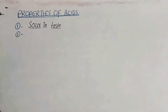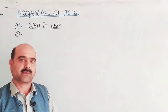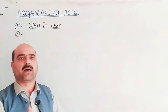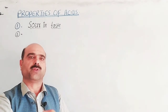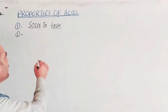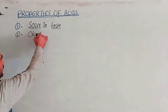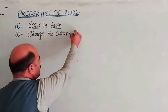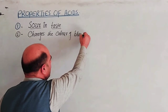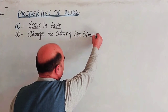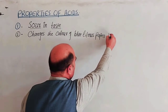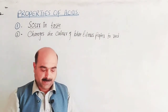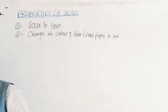If you have a solution or a liquid and want to know whether it is an acid or not, you can use litmus paper. If you dip a blue litmus paper into an acid, it changes the color of the blue litmus paper to red. It turns blue litmus red.